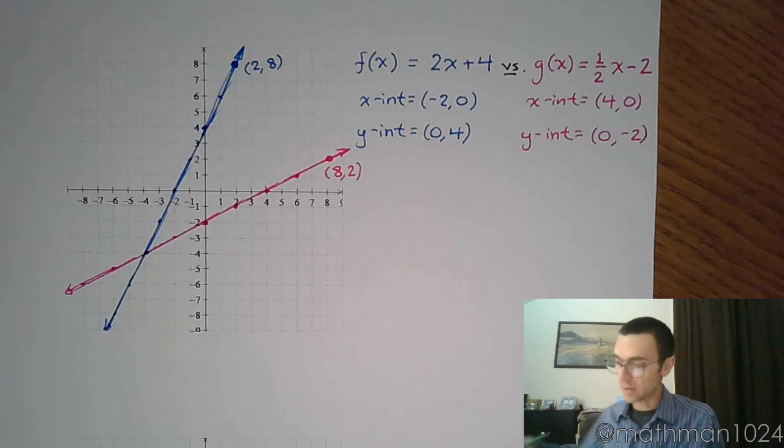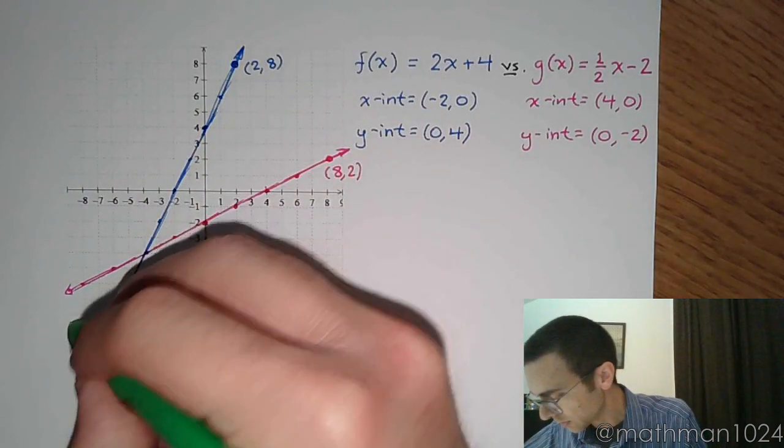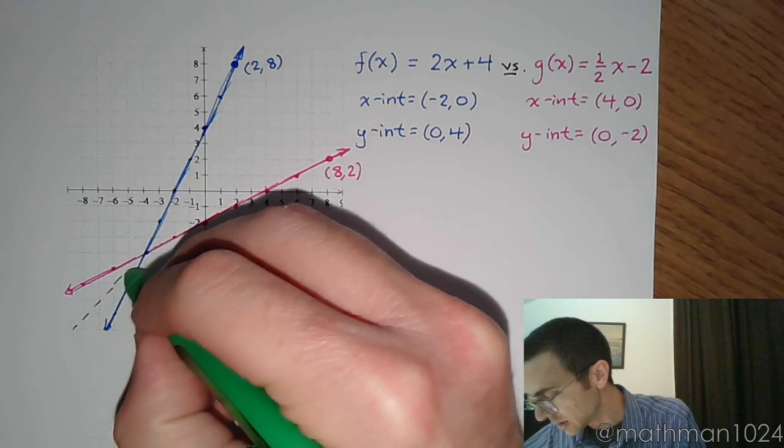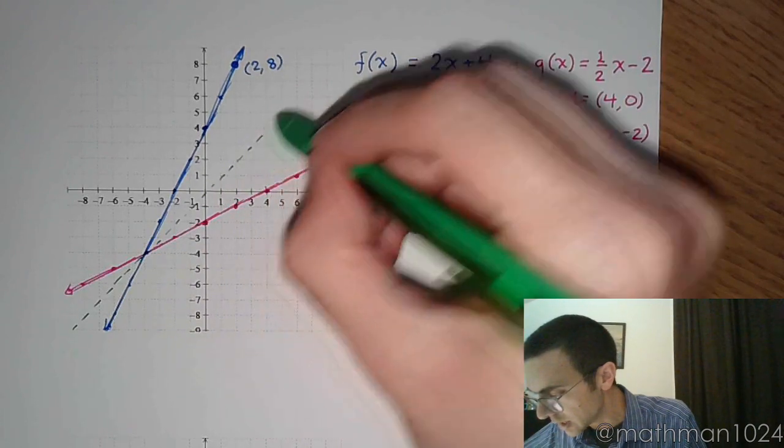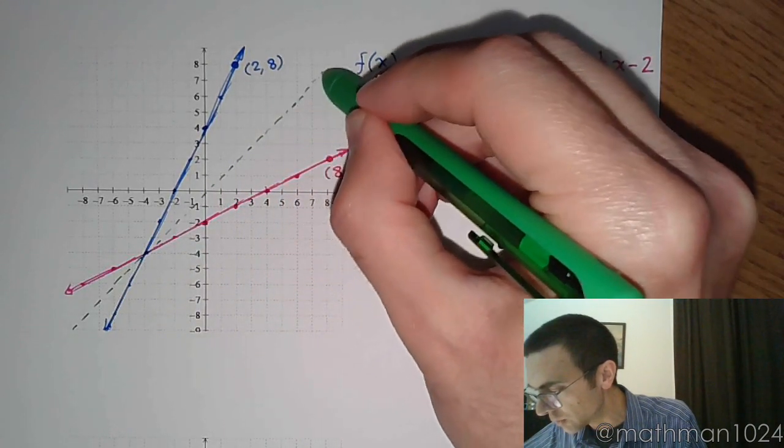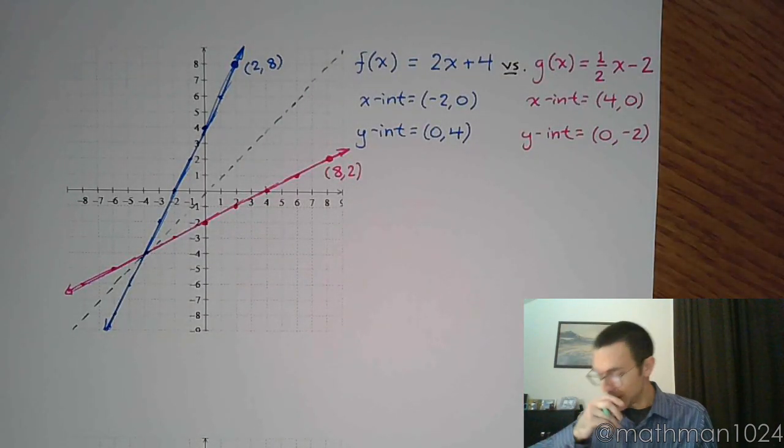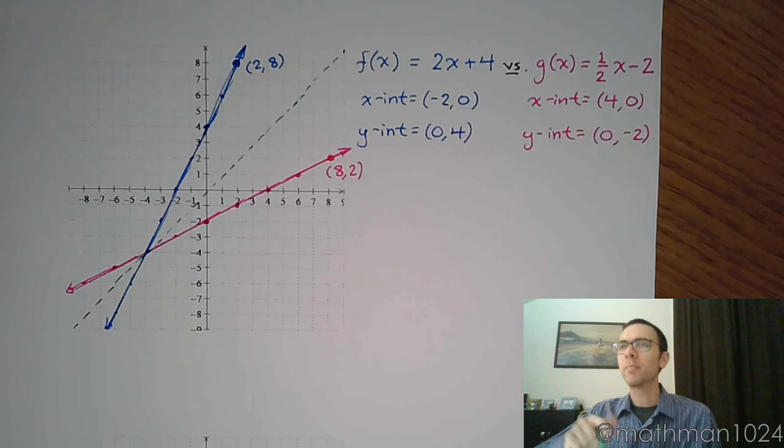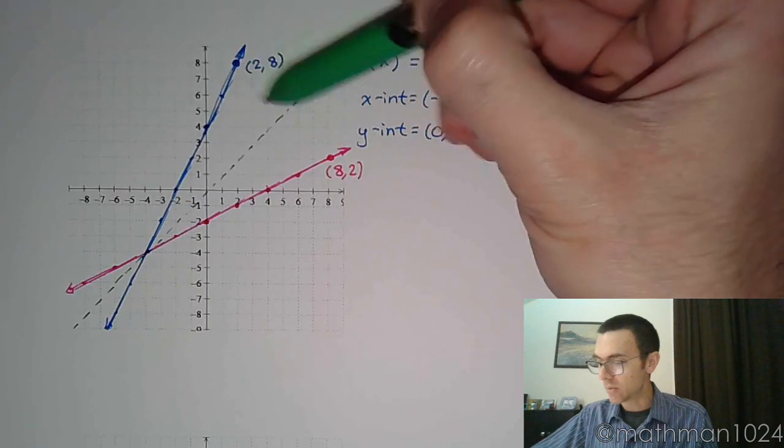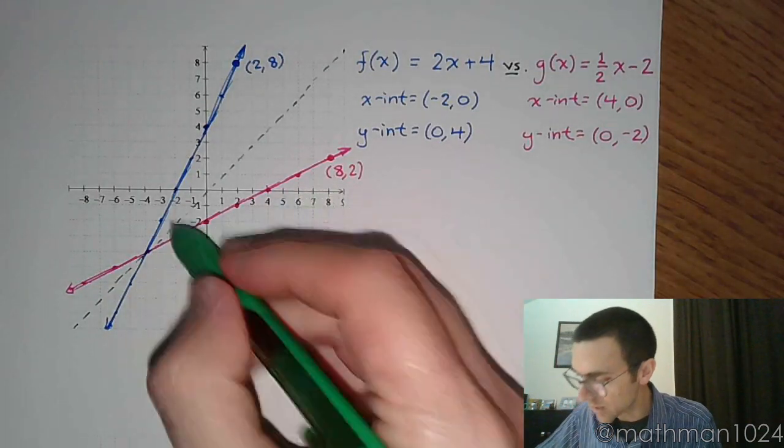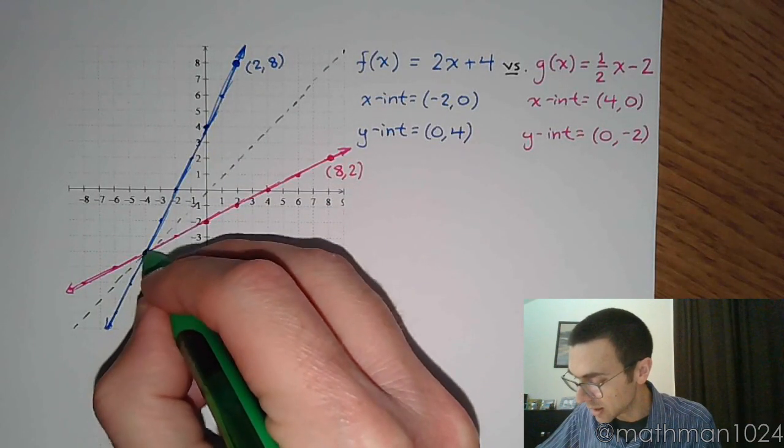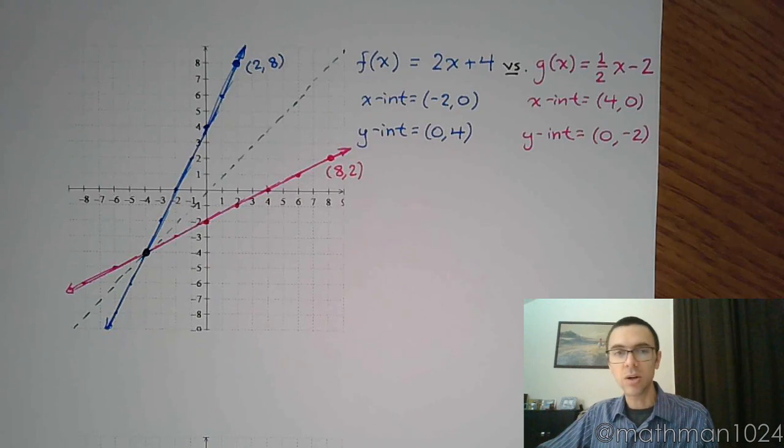And one of the neat things about this is that if you were to draw the identity function, the identity function is just y equals x. And y equals x is this slanted line with a slope of 1 that goes right through the middle. You're going to find out that this acts as a mirroring line. So what you have on one side, you have reflected on the other side of this. You'll also see that any time these graphs are going to intersect, they're going to intersect on that line of symmetry.